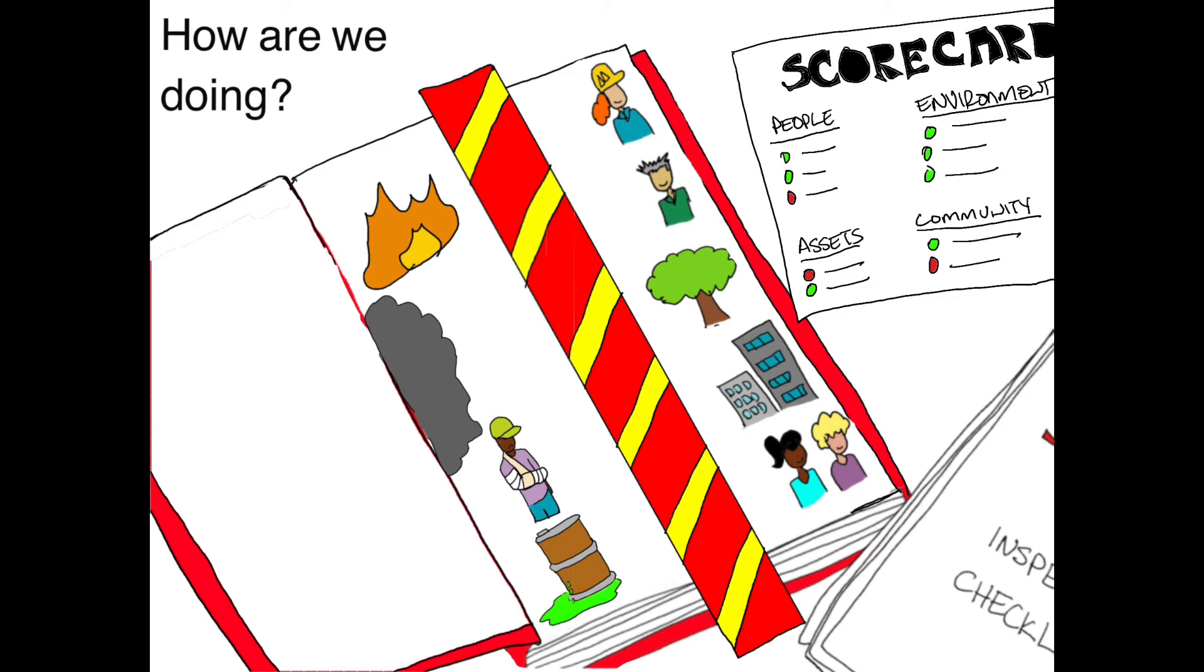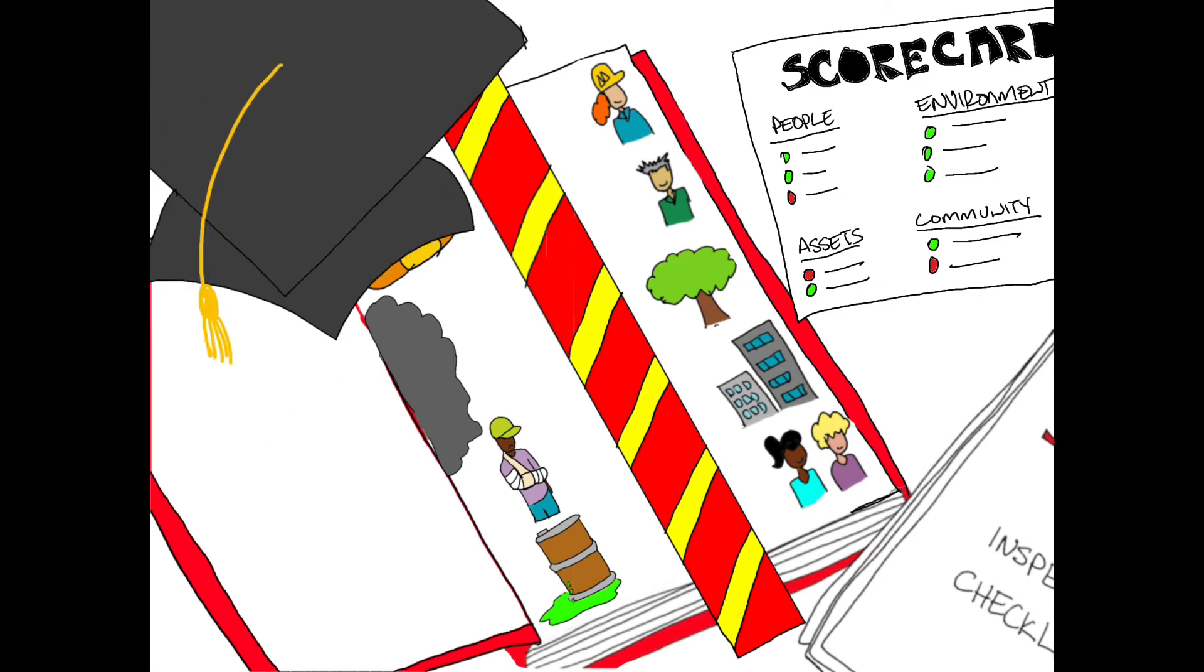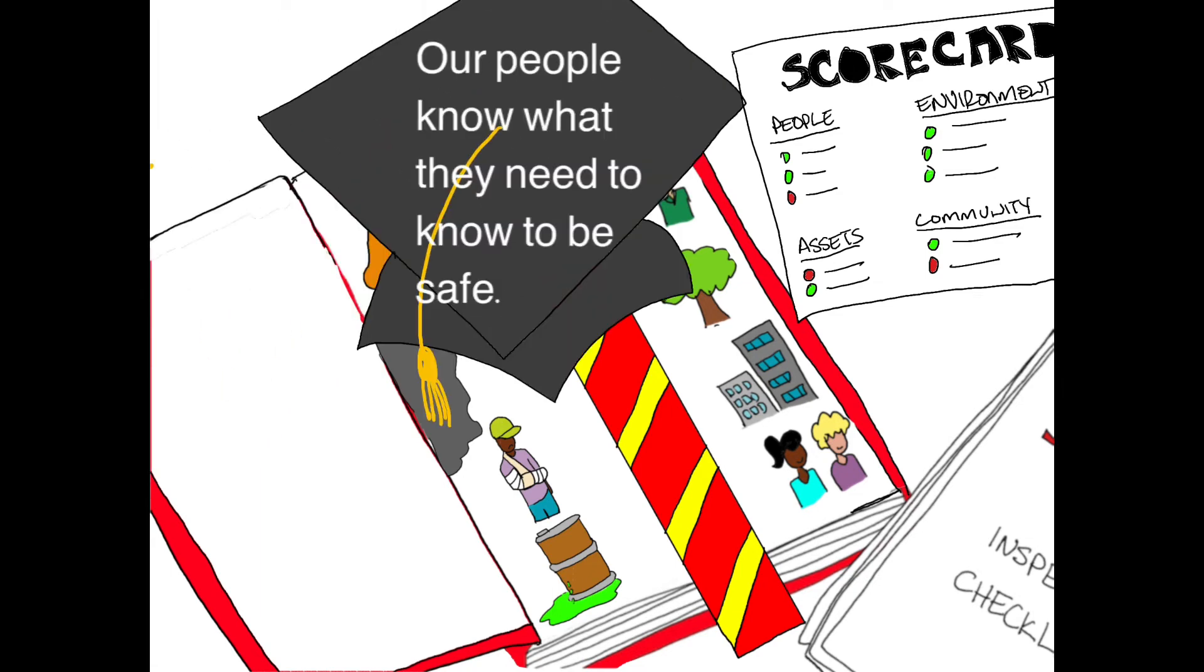The final part of an HSSE MS is around training and inductions. This ensures workers know rules, risks, and safety procedures. It can include safety training, drills, accident simulations, hazardous waste management practice, and more.